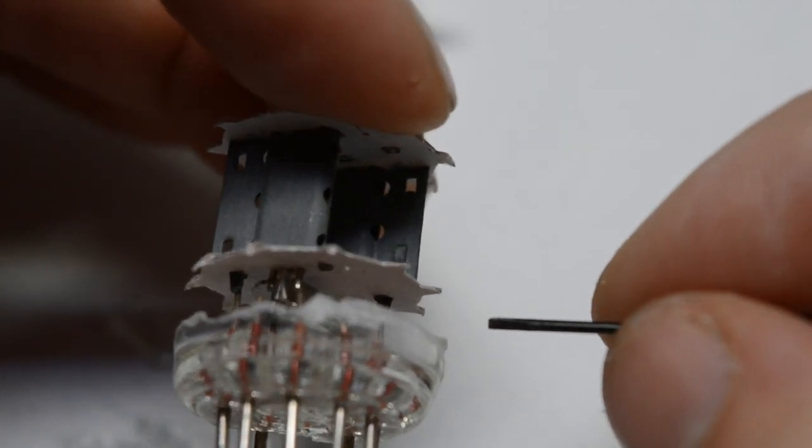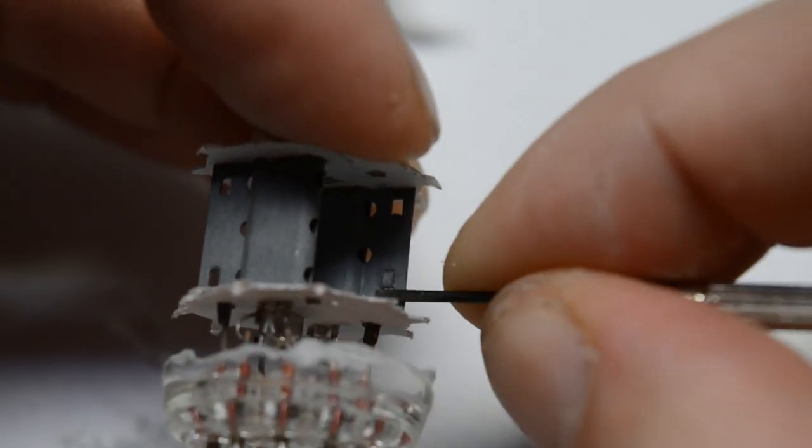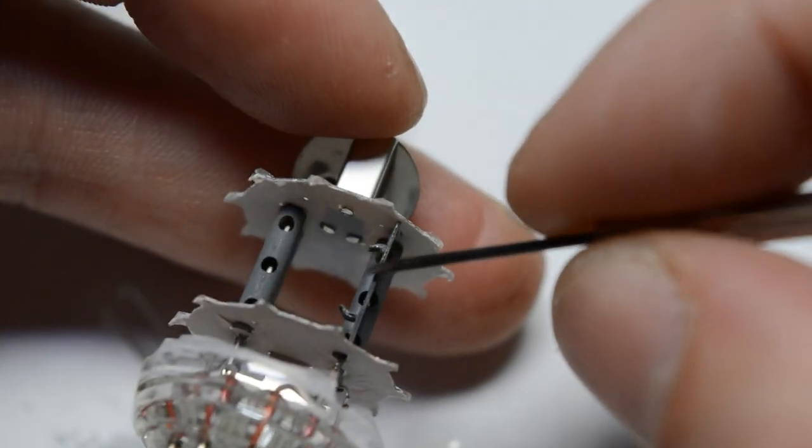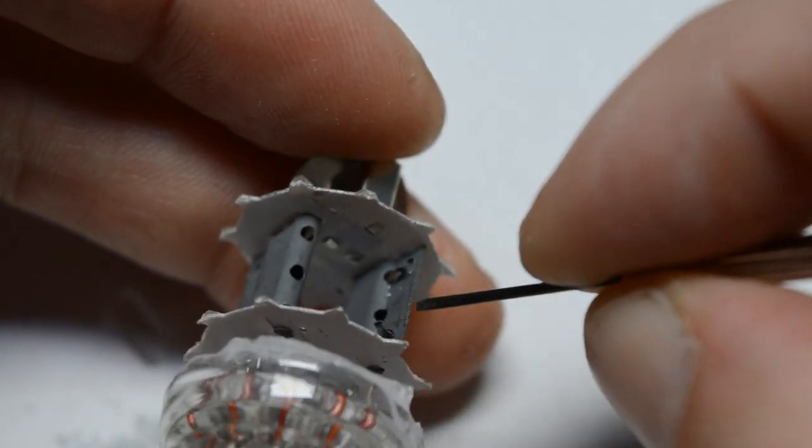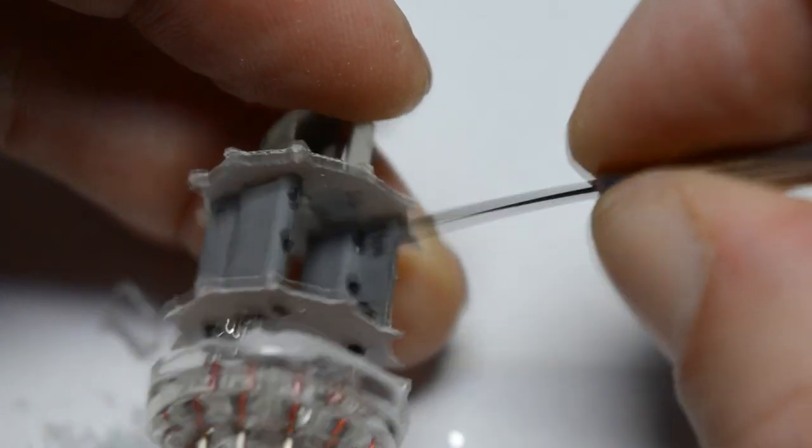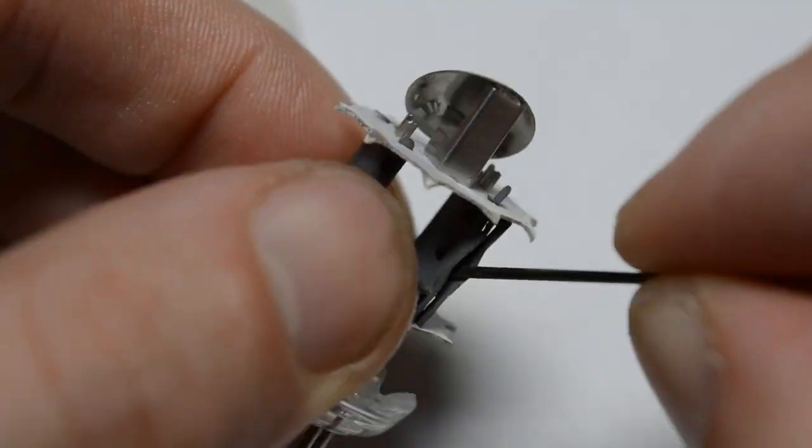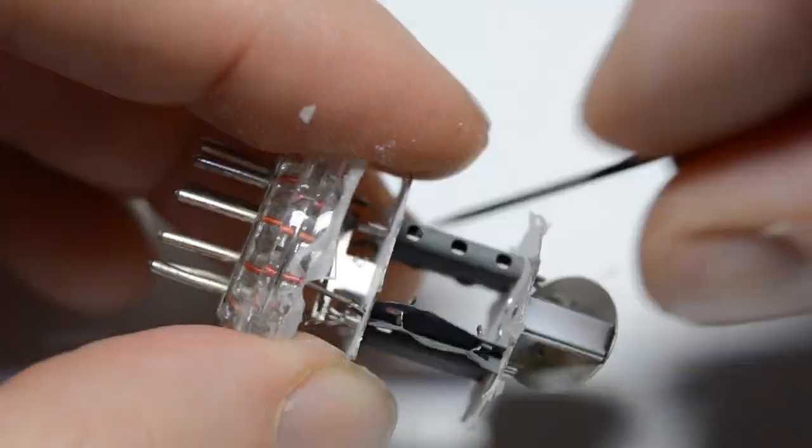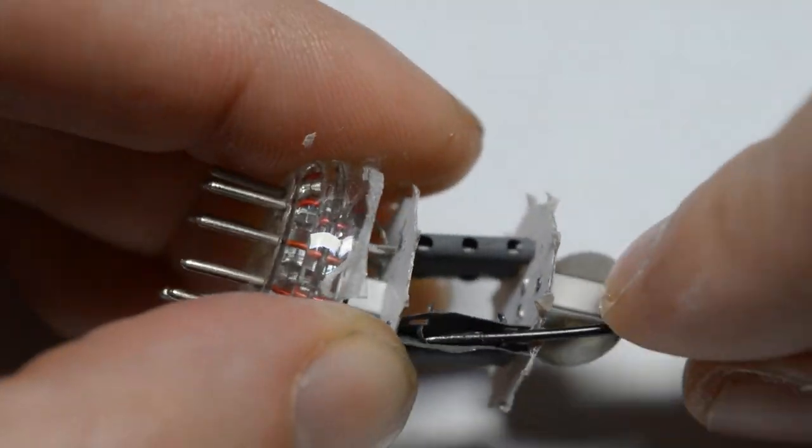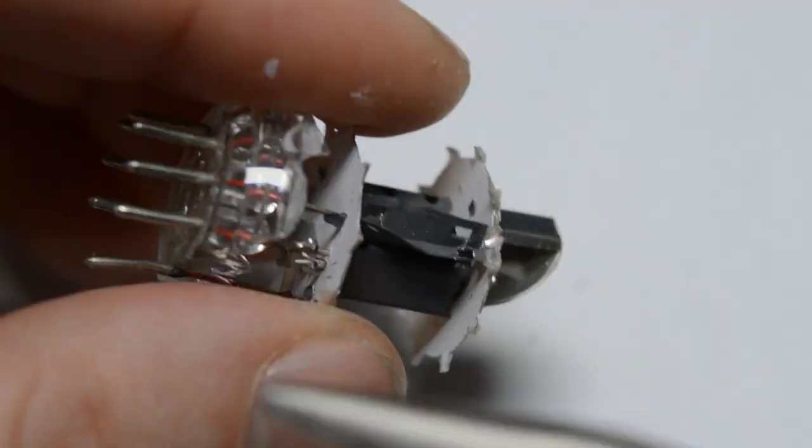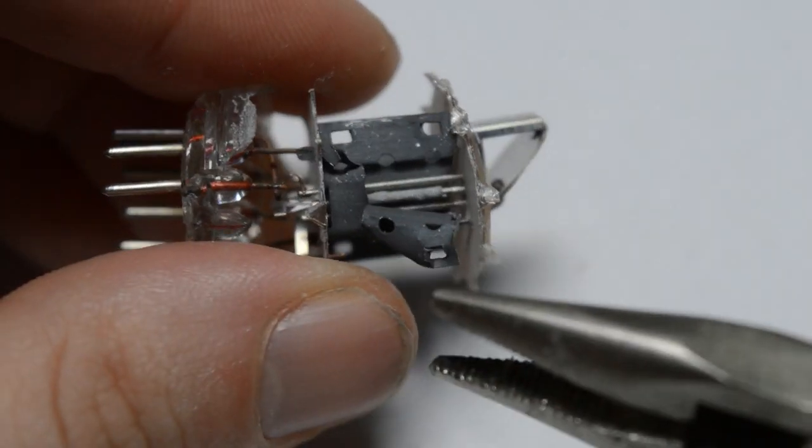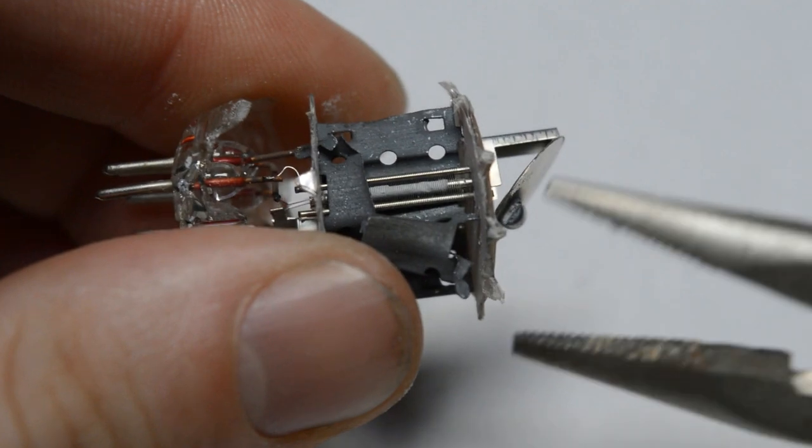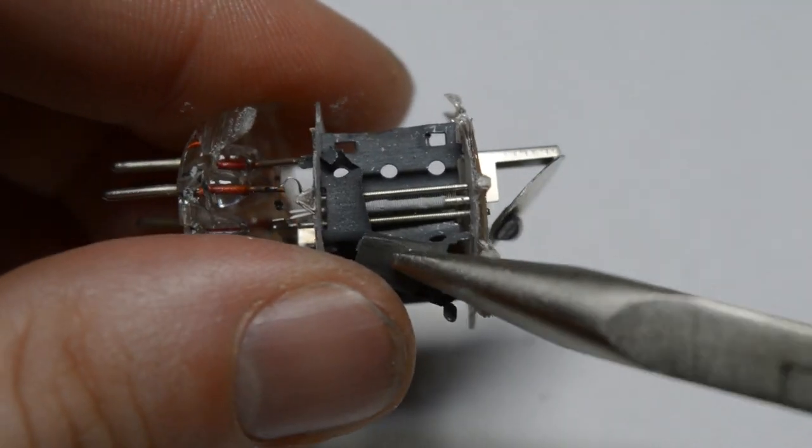So to take it apart, what I'll have to do is just unbend these. And now I can just pry these things open. And with a bit of encouragement, the anode is slowly starting to come apart.